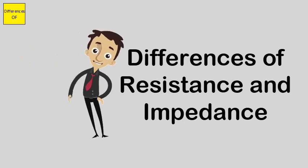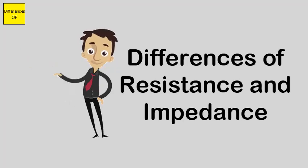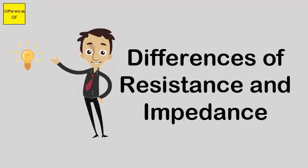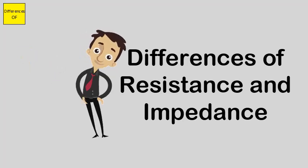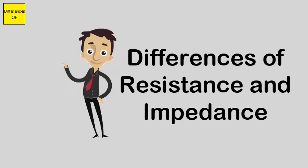Resistance is denoted with R. Impedance is denoted with symbol Z. The effect of resistance is constant regardless of the frequency. Impedance varies with frequency values.